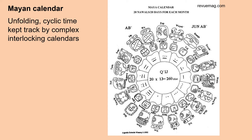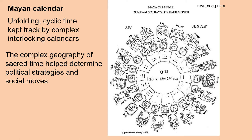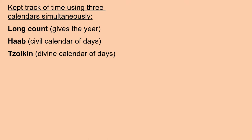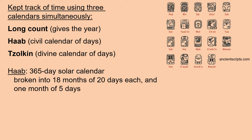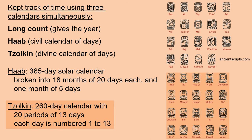The Mayan calendar is very complex, with unfolding cyclic time kept track by interlocking calendars. They used three simultaneous calendars. The long count gives the year. The haab was the civil calendar — a 365-day solar calendar broken into 18 months of 20 days each, and one month of five days. The tzolk'in was the divine calendar, using a 260-day calendar with 20 periods of 13 days, and each day is numbered 1 to 13.